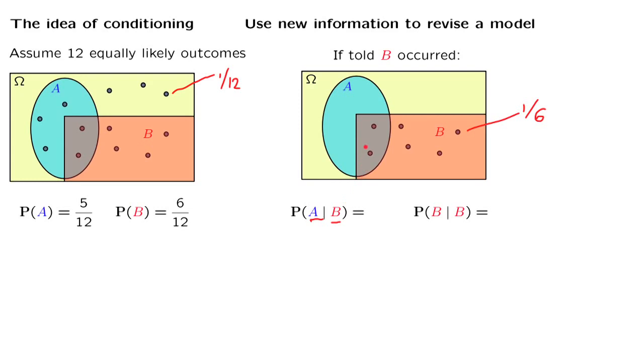So in the new model, where these outcomes are equally likely, we note that event A can occur in two different ways. Each one of them has probability 1 over 6. So the probability of event A is 2 over 6, which is the same as 1 third.